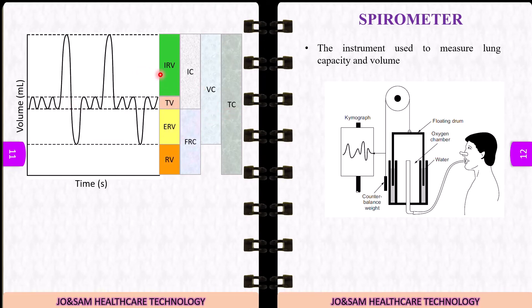IRV plus TV plus ERV plus RV equals total capacity (TC). IRV equals 3600 ml, TV equals 500 ml, ERV equals 1200 ml, RV equals 1200 ml, so total TC equals 6000 ml.